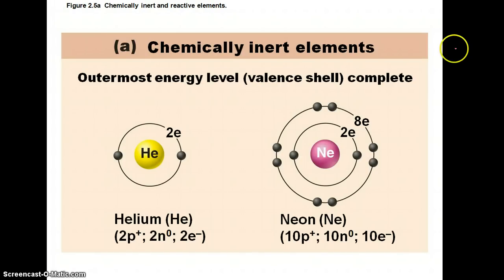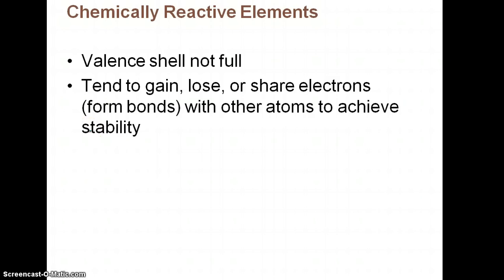So here you can see the electron configuration. Their outer shell is completely full. Chemically reactive elements are going to be elements that have a valence shell that's not full. So these tend to gain, lose, or share electrons, and when they do that, we actually call those bonds. And they're going to want to do that so that way they become stable. Everything wants to be stable.